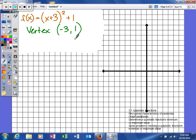Remember that it is the opposite of how it appears inside the parentheses for the h-value. So x plus 3 will result in the h-value of negative 3, and then k is going to move us up 1. So we're going to graph our vertex at negative 3, up 1. So here's our vertex.